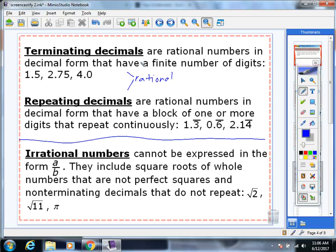You can write these with a finite number of digits. This decimal ends, all right? The repeating decimals, you're going to have to put a repeating decimal form with a block of one or more digits that repeat continuously. So 1.3 repeating, 0.6 repeating, 2.14 repeating. Those are all still rational.